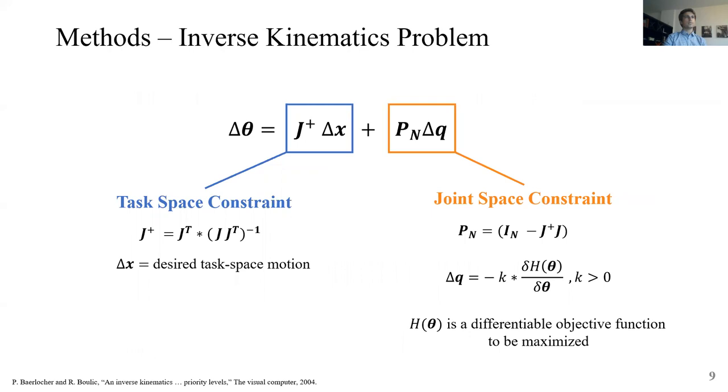So going deeper in this formulation, the term in blue solves for the task space constraint and is named particular solution and the term on the right is used to add additional joint space constraints, and it is the homogeneous solution. In particular, the perturbation term, which is delta q, is obtained by a projected gradient algorithm that uses the partial derivative of an objective function, which is H theta, that has to be maximized. This equation can be seen overall as a weighted sum, where J plus and the null space projector are the weights. And by definition, the null space projector is close to zero. And this is why the joint space constraints has a lower priority and lower impact with respect to the task space.